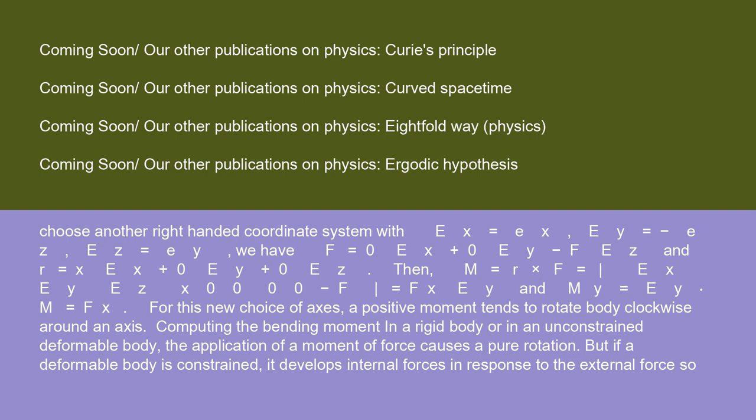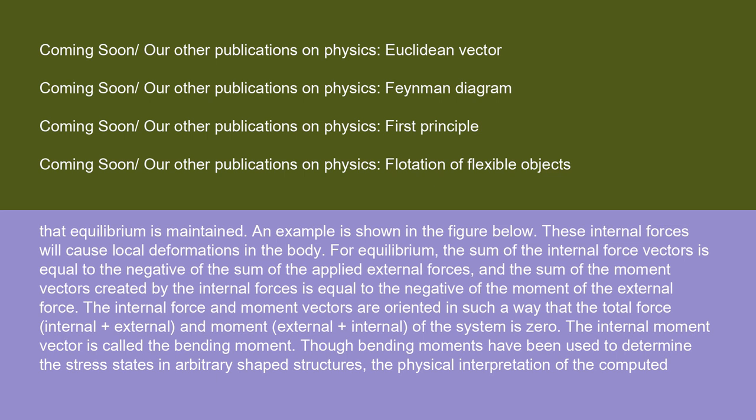For this new choice of axes, a positive moment tends to rotate body clockwise around an axis. Computing the bending moment: in a rigid body or in an unconstrained deformable body, the application of a moment of force causes a pure rotation. But if a deformable body is constrained, it develops internal forces in response to the external force so that equilibrium is maintained. An example is shown in the figure below. These internal forces will cause local deformations in the body. For equilibrium, the sum of the internal force vectors is equal to the negative of the sum of the applied external forces, and the sum of the moment vectors created by the internal forces is equal to the negative of the moment of the external force.